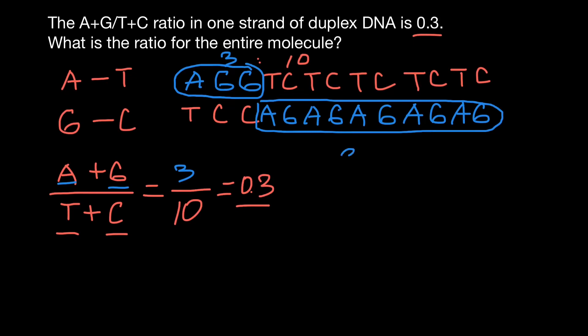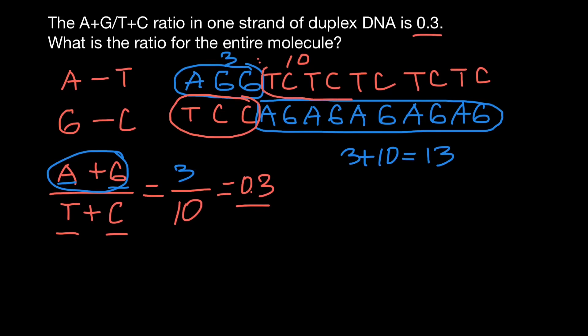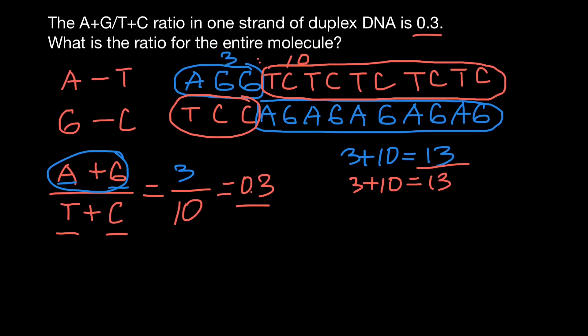So in total we have 3 plus 10, which equals 13 bases of adenine and guanine. And we also have 3 bases of thymine and cytosine on the lower strand and 10 on the top strand, so again 3 plus 10 equals 13. The ratio, as you can see, would be 1 — 13 divided by 13 equals 1. So we can conclude that the ratio of purines to pyrimidines in double-stranded DNA always equals 1.